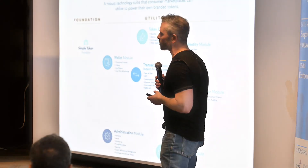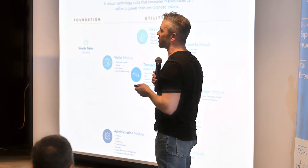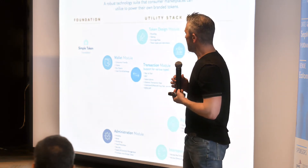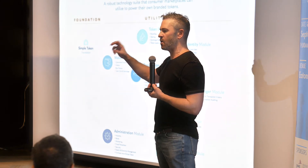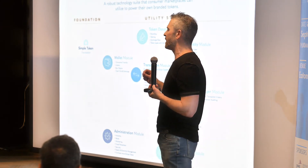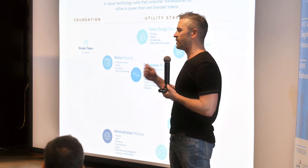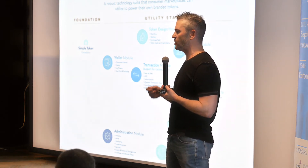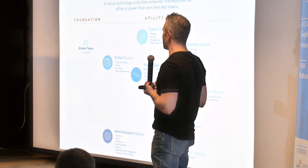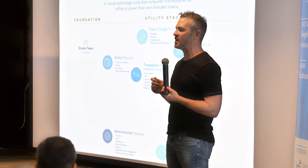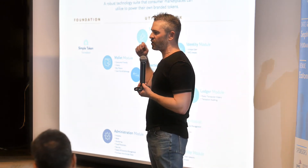We have a number of different modules that we're building. The first is what we call the token design module. The way to think about it is every company starts with SimpleToken, which is our ERC20 token, and they're able to stake SimpleToken against creating their own branded tokens. So it could be Jayhan token — Jayhan acquires a bunch of SimpleToken and then stakes that in a smart contract against creating Jayhan tokens.